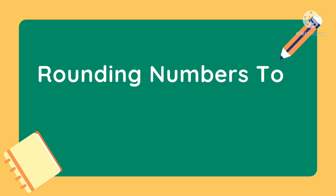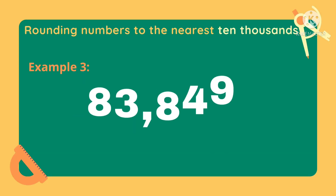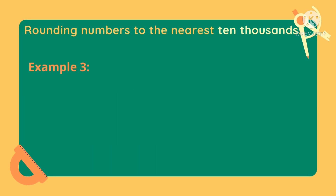Now, let's have an example of rounding numbers to the nearest ten thousands. Let's try to round off 83,849 to the nearest ten thousands. Again, we need to determine which digit is in the ten thousands place.